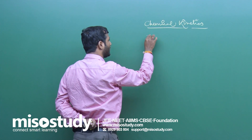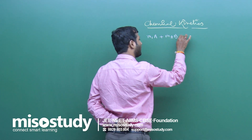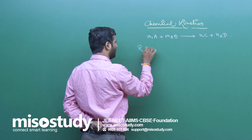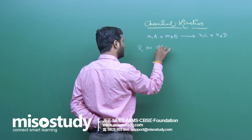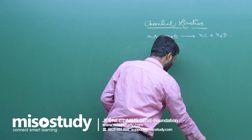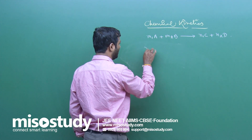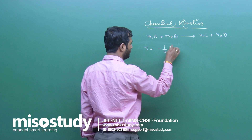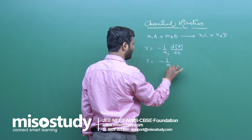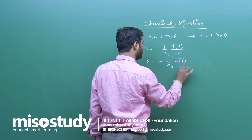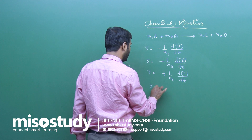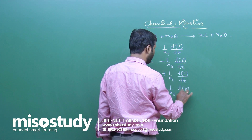What is the rate of a reaction? Suppose we have a reaction: m₁A + m₂B → n₁C + n₂D. Then the rate r can be written as: r = −(1/m₁)(d[A]/dt) = −(1/m₂)(d[B]/dt) = +(1/n₁)(d[C]/dt) = +(1/n₂)(d[D]/dt).